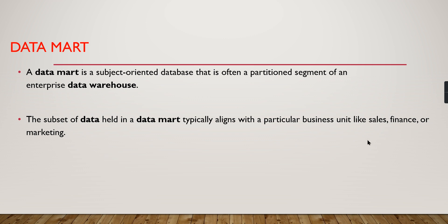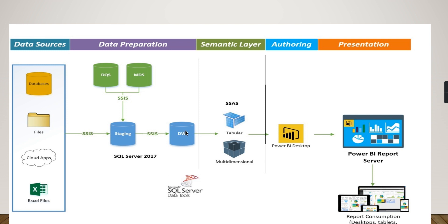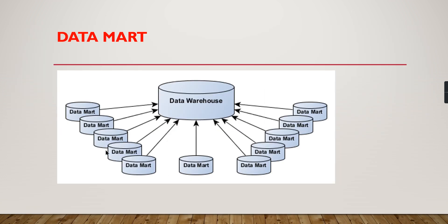Each subject area — when you build one dimensional model — that becomes your data mart. Together, multiple data marts make up your data warehouse. So the data warehouse contains multiple data marts: sales, finance, marketing, purchasing, reselling, or any department related to the business. Each subject area will create one or two star schemas in the data mart. Sales becomes one data mart where all data related to sales can be fetched. We can differentiate data marts typically using schema definitions.